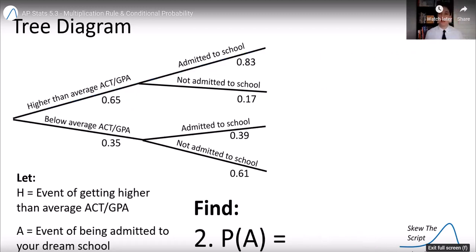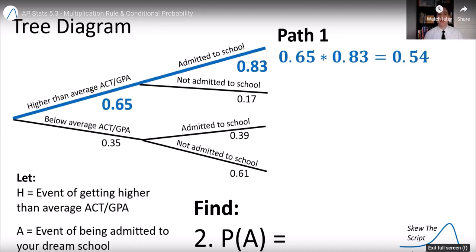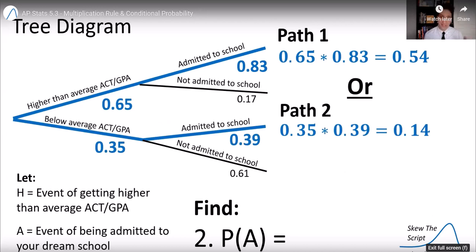Now let's find the probability of A, the probability of being admitted to your dream school, which is one of the final events here. So this is a little bit trickier. Now there's multiple paths to being admitted to the school. There's path 1 where you got a higher than average GPA in ACT and you're admitted. We found the probability of that path already. There's also the path of getting below average ACT GPA, but still making it into the school anyway.